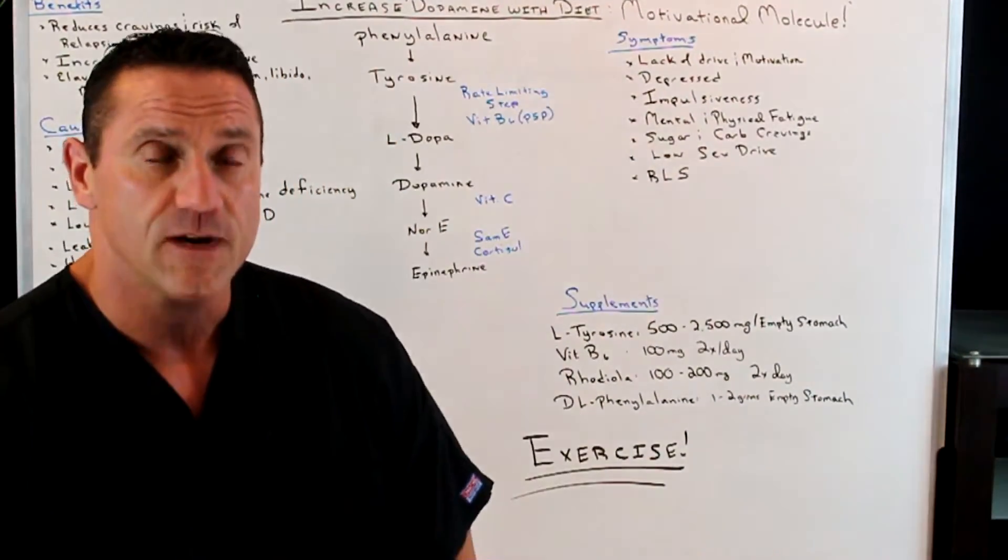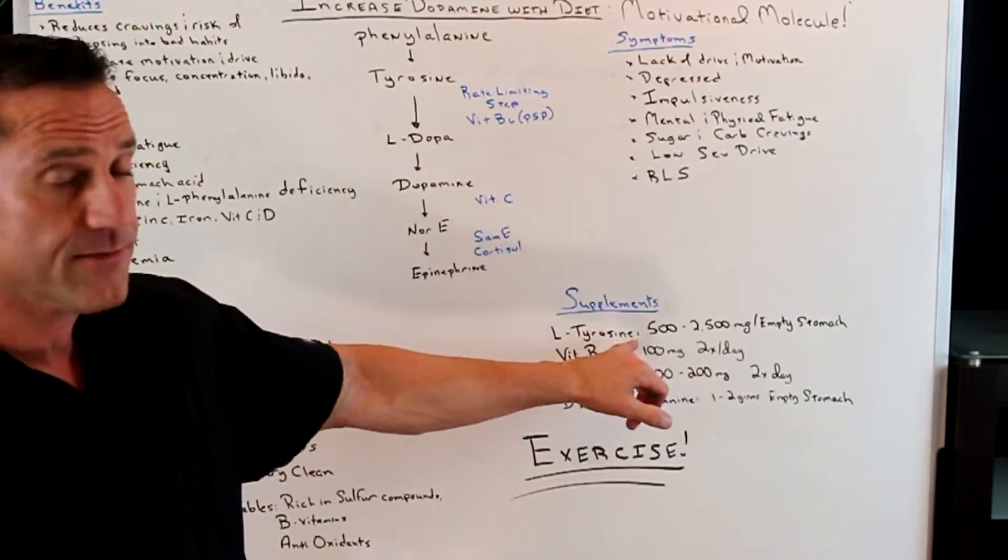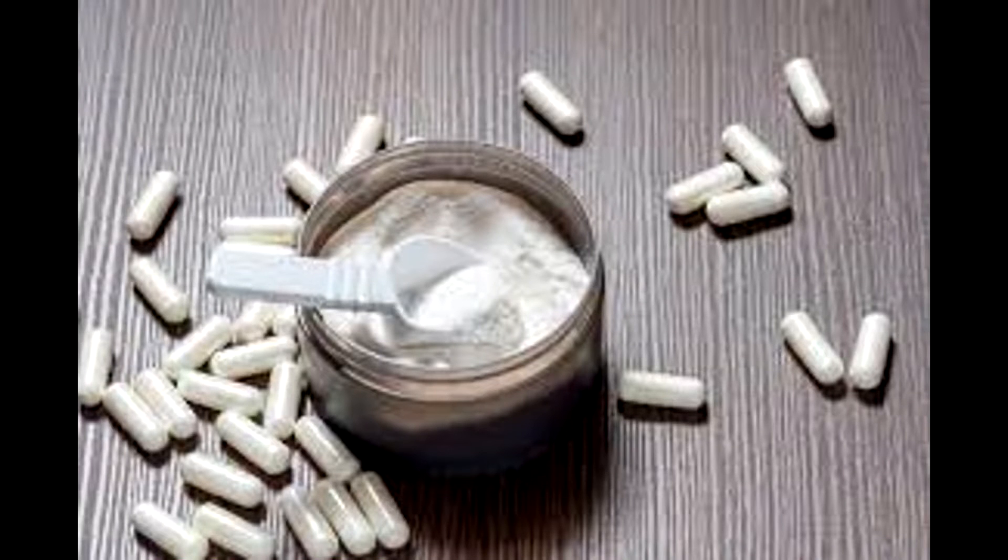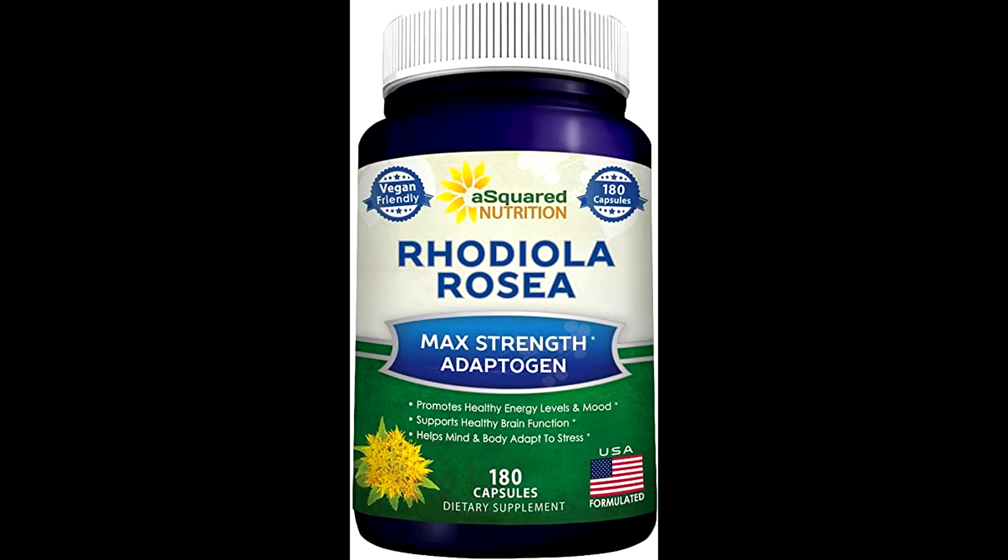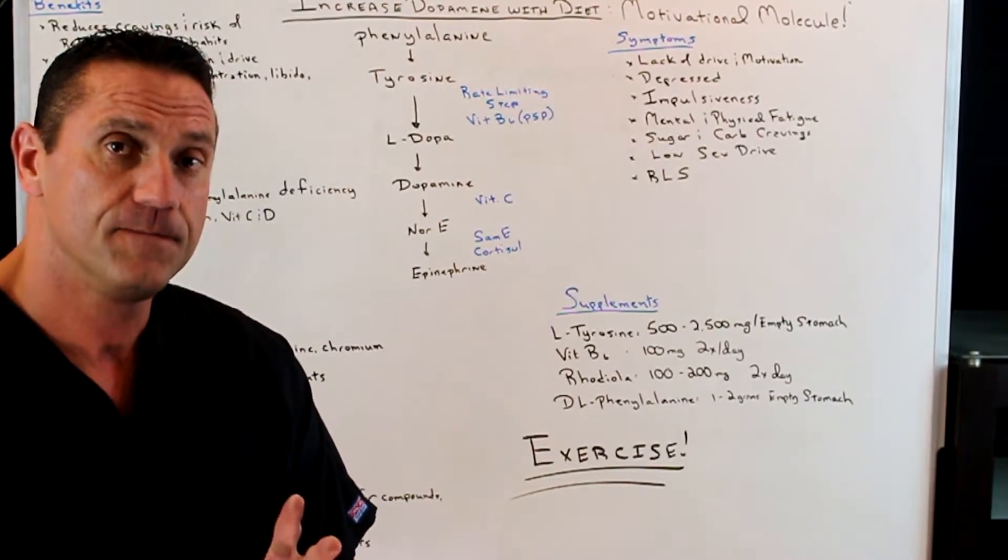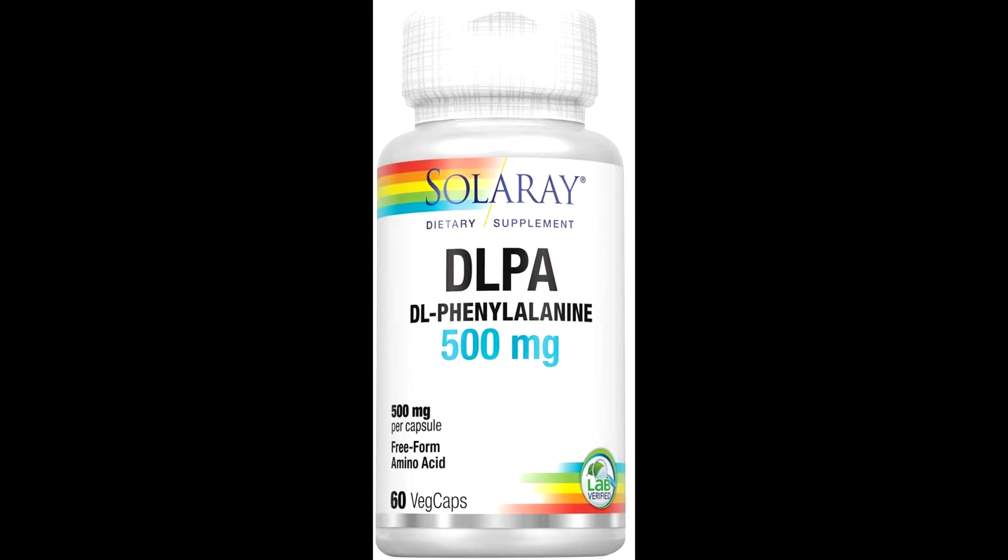So what supplements? I always recommend supplements as well. You can take L-tyrosine. Take anywhere from 500 milligrams to 2,500 milligrams on an empty stomach. Vitamin B6 or the broken down version P5P, which I always recommend. You want to take 100 milligrams twice a day. Rhodiola, phenomenal, helps stabilize the adrenals and also to help with the brain, 100 to 200 milligrams twice a day. DL-phenylalanine, one to two grams on an empty stomach. Amino acids, you always want to take those on an empty stomach.